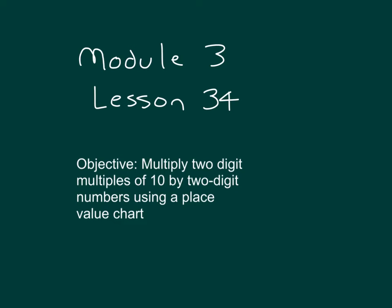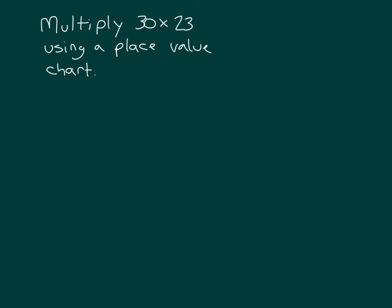Within this lesson, we'll multiply two-digit multiples of 10 by two-digit numbers using a place value chart. Let's start with this problem, where we will multiply 30 times 23 using a place value chart.